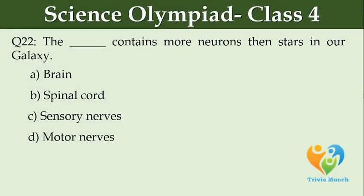Dash contains more neurons than stars in our galaxy. Option A: brain. Option B: spinal cord. Option C: sensory nerves. Option D: motor nerves.